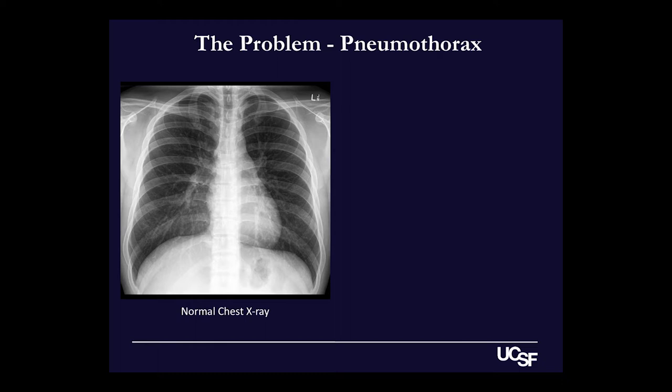On the left here we have a normal chest X-ray. I want you to focus on two things. First, notice that the lungs are dark because they're mostly air and they have a fine, wispy branching pattern throughout them, which is the normal appearance of blood vessels and airways. Second, notice that this wispy pattern goes all the way to the edge of the chest where it meets the ribs.